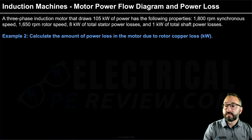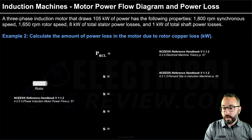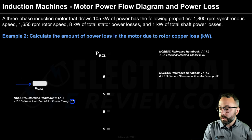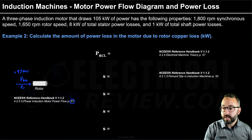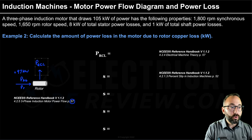Example two asks for the power loss due to rotor copper losses. The air gap power (rotor power) was 97 kilowatts. Similar to the stator, the rotor has copper losses only — no core losses. We can convert between air gap power and rotor copper losses using slip: rotor copper losses equal slip times air gap power. This formula is from page 57 of the reference handbook, section 4.2.4.